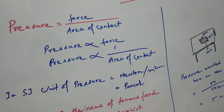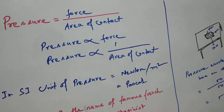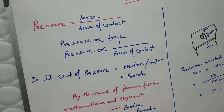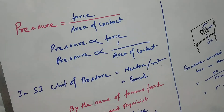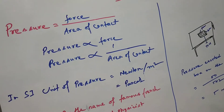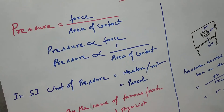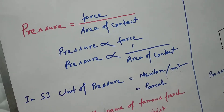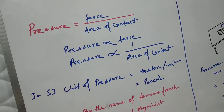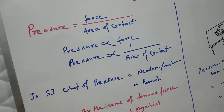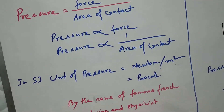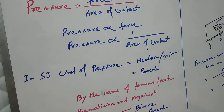Pressure is proportional to force — the more the force applied, the more pressure will be exerted. And pressure is inversely proportional to the area of contact — the less the area of contact, the more pressure will be exerted.